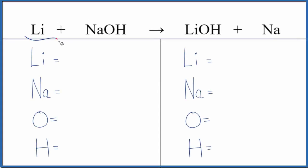Let's balance the equation for Li plus NaOH gives us LiOH plus Na. This is lithium, we have sodium hydroxide, we get lithium hydroxide and then sodium metal. Let's also look at the type of reaction and write the states.